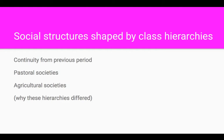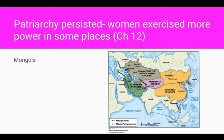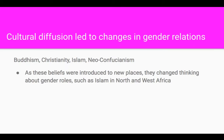Women in pastoral societies are seen as fulfilling a more vital role for survival, whereas in agricultural societies, as women are taking care of the home, it's perceived as being less important. There is a persistence of patriarchy, but in some places, such as the Mongol Empire, women did exert more power and were highly regarded as important components in social organization. Gender relations were also affected by cultural diffusion, as belief systems spread throughout Afro-Eurasia and began to challenge thinking about gender roles.